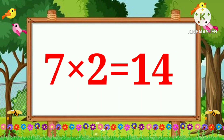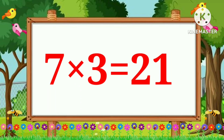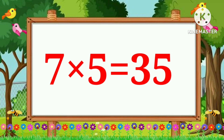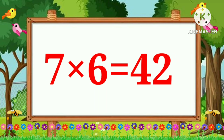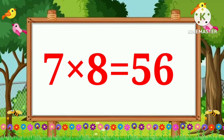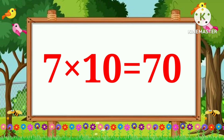Table of Seven. Seven ones are seven. Seven twos are fourteen. Seven threes are twenty-one. Seven fours are twenty-eight. Seven fives are thirty-five. Seven sixes are forty-two. Seven sevens are forty-nine. Seven eights are fifty-six. Seven nines are sixty-three. Seven tens are seventy.